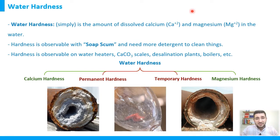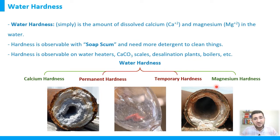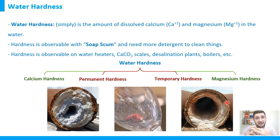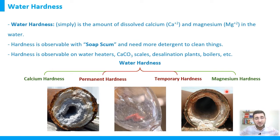We can classify hardness according to their chemical nature. We have calcium hardness, related to dissolved calcium ions, and magnesium hardness, related to magnesium ions. Together they form total hardness. Another classification distinguishes permanent hardness from temporary hardness, as we will see shortly.